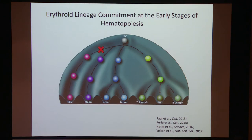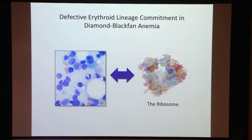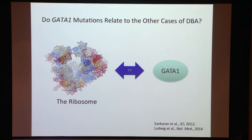We've been particularly interested in disorders that affect particular lineages, including Diamond Blackfan anemia — a disorder where the earliest erythroid-committed progenitors and precursors are absent from the marrow, yet all other blood cell lineages are produced normally. The vast majority of cases, about 90%, are due to loss-of-function mutations in one of 24 different ribosomal protein genes. How that can result in a specific disorder in erythropoiesis has remained a major mystery. We identified some rare mutations that can cause this disorder in the transcription factor GATA1.